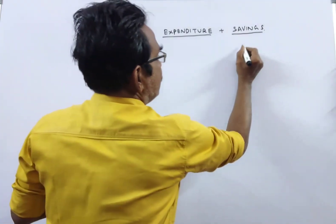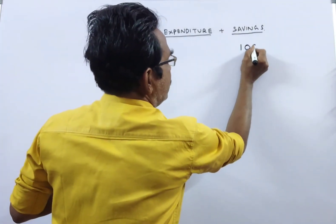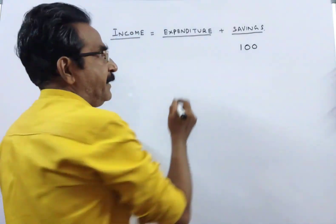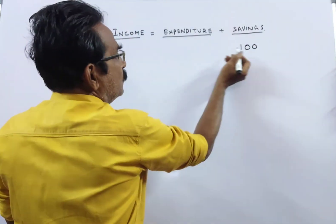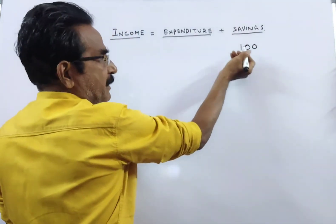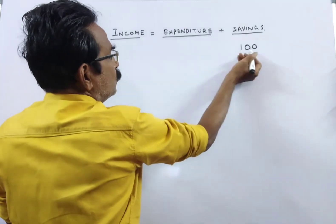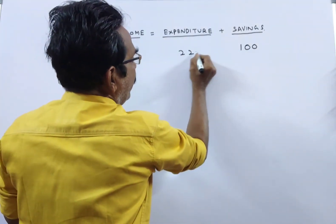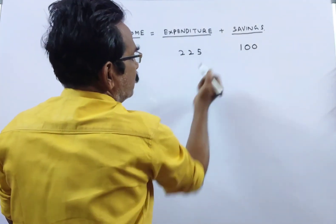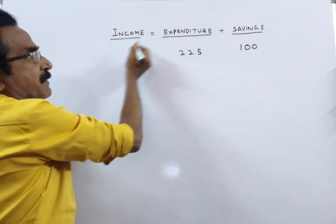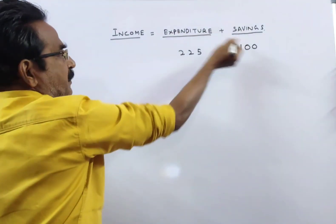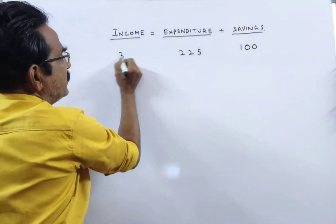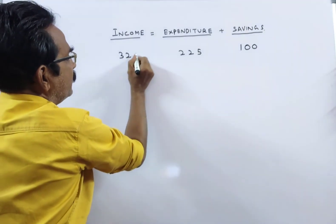Say savings = 100 rupees, then the expenditure becomes 225% of her savings. So, 225% of 100 means 225, so expenditure is 225. And income is equal to expenditure plus savings. Therefore, income becomes 325.